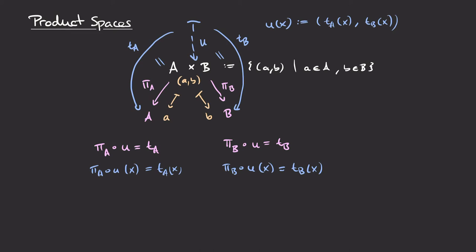So far we've been thinking about sets and functions. Now we'd like to transition to topological spaces and put topologies on all of these sets. We start with two topological spaces A and B with topologies, and we want to form a product space, which has as its underlying set the Cartesian product of sets but is additionally endowed with a topology such that the universal property holds in the category of topological spaces. This means we replace the word 'set' with 'topological space' and 'function' with 'continuous function.'